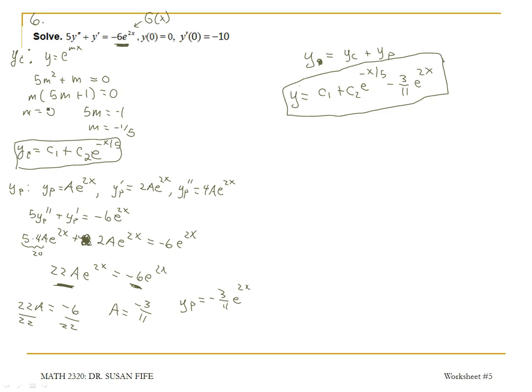Now we're given initial values. We're given that y of 0 is 0, and y prime of 0 is negative 10. We can use those initial values to solve for c1 and c2. y of 0 equals 0 gives me c1 plus c2, this becomes a 0, e to the 0 power is 1, that actually becomes 1 times c2, and then minus 3 elevenths e to the 0 power. Then I need y prime.